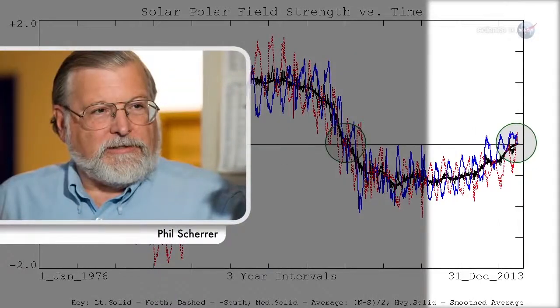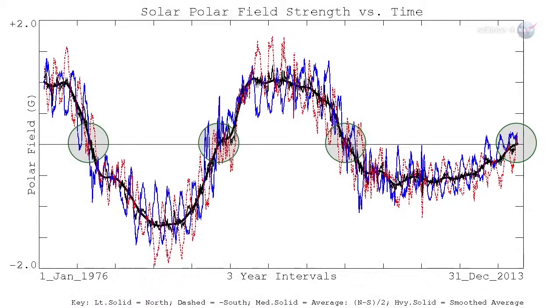Solar physicist Phil Shearer, also at Stanford, describes what happens. The Sun's polar magnetic fields weaken, go to zero, and then emerge again with the opposite polarity. This is a regular part of the solar cycle.